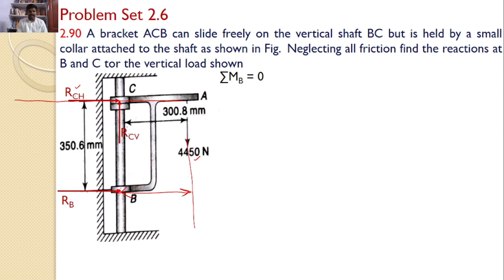So straight away I can take the moments about point B and this is RCH multiplied by 350.6 plus 4450 into 300.8, because both the forces are creating the moments in the same direction.